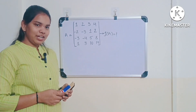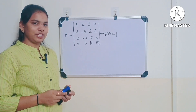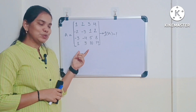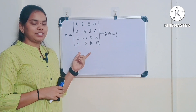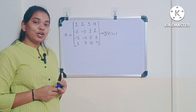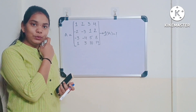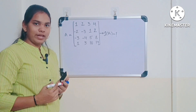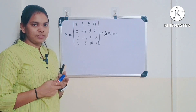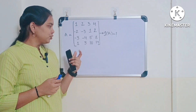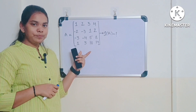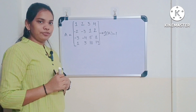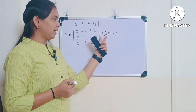Hi friends, welcome to my channel Network Courses with Nagmin. Today in this class we will see how to find the rank of the matrix using the Echelon form of a matrix. In the previous class we saw the concept of Echelon form and how to convert a given matrix into Echelon form. Today we will solve one more problem, converting it into Echelon form and finding the rank of the given matrix.